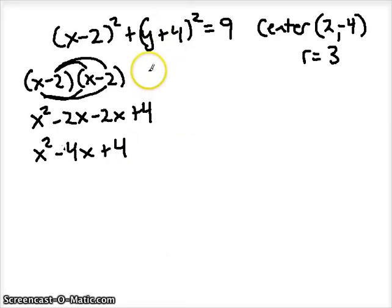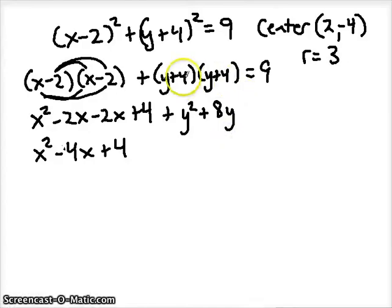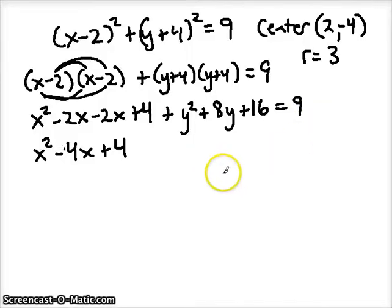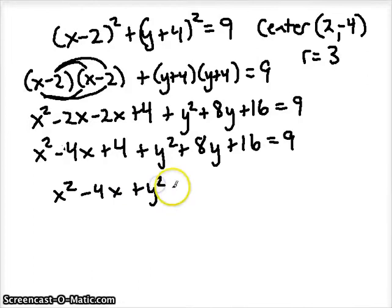Now let's expand Y plus 4 squared. We get Y plus 4 times Y plus 4. Using the shortcut: Y squared, then double 4 with the letter to get 8Y, then square 4 to get positive 16. That equals 9. Now combining like terms and bringing everything to one line: X squared minus 4X plus Y squared plus 8Y — the constants 4 plus 16 give 20 — and it equals 9.